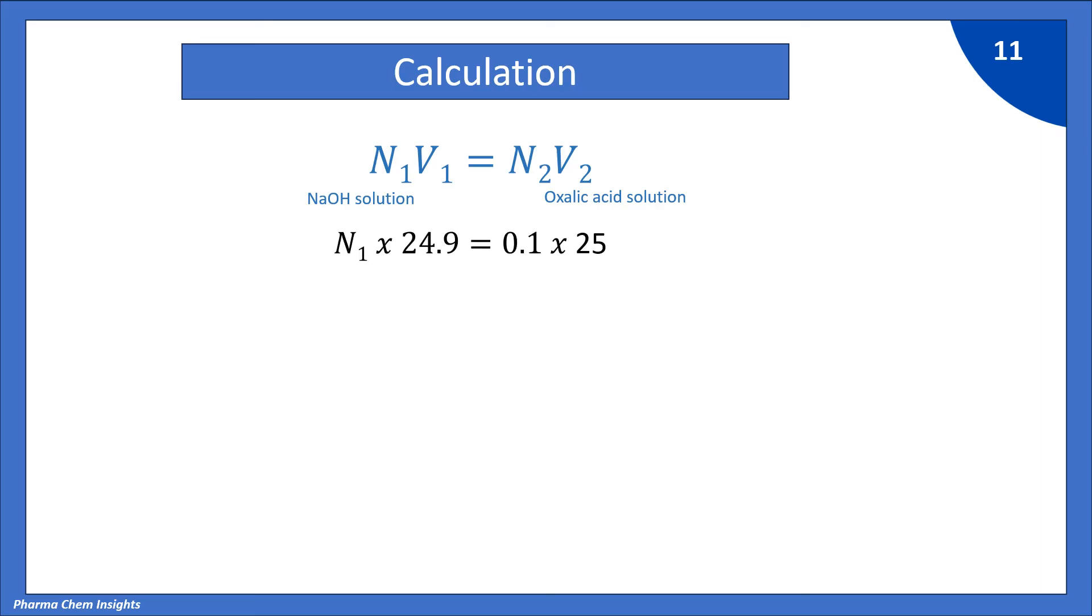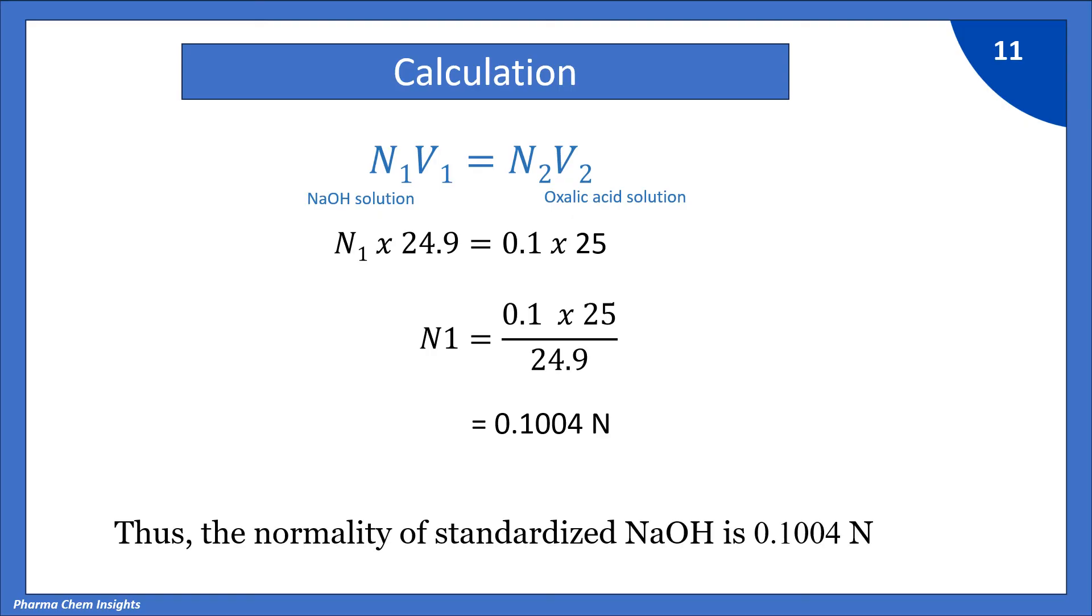So by putting the values N1 into 24.9 that is volume of NaOH consumed in titration is equal to 0.1 into 25. So by calculating we get 0.1004 normal solution. Thus the normality of standardized NaOH is 0.1004 normal. So this is how we standardize 0.1 normal NaOH solution correctly.